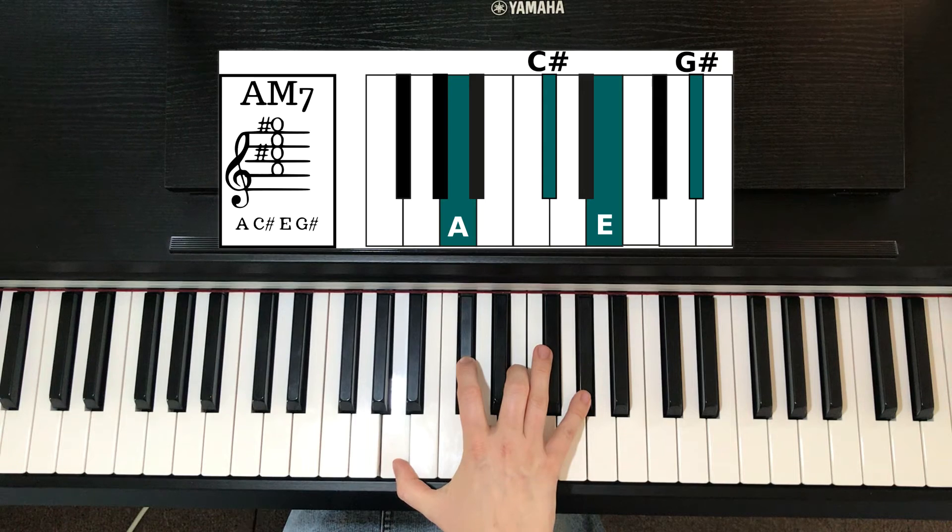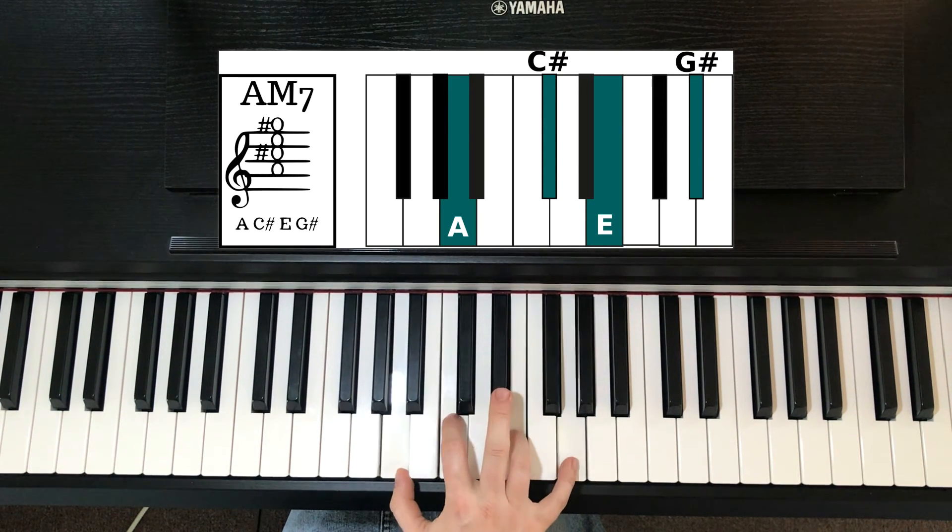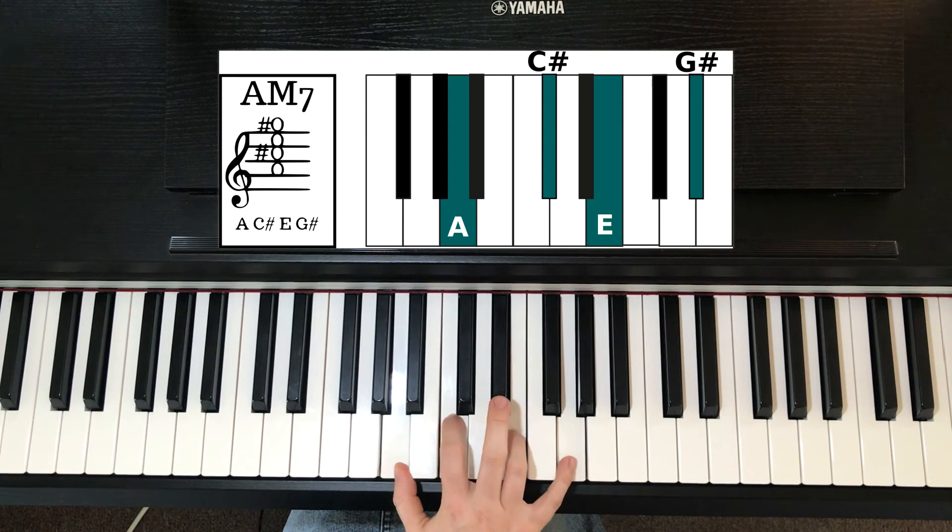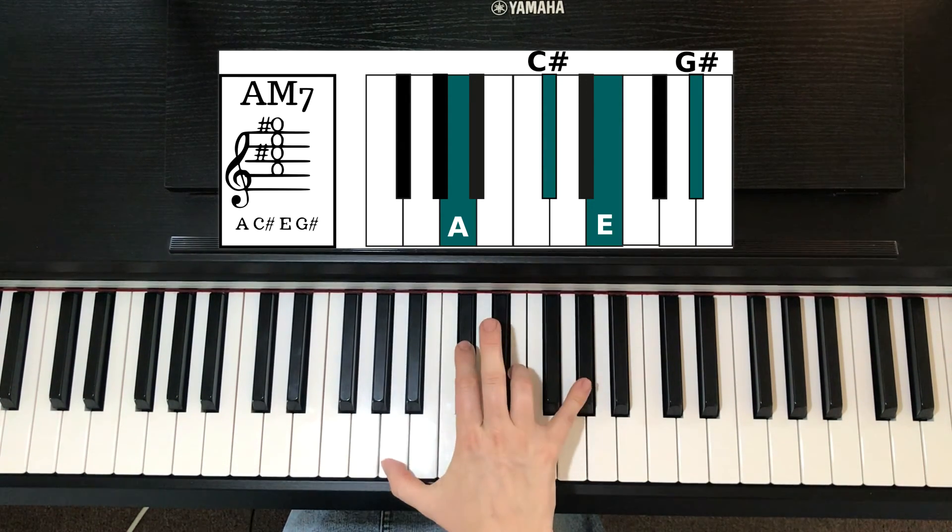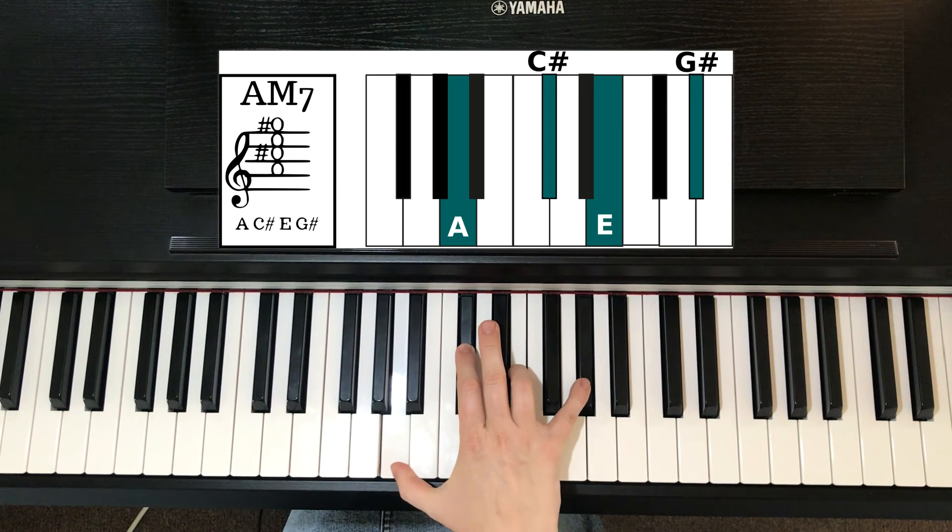It's different than an A small M seven, which is that one. A small M seven, that's the minor seven. This is a major seven. Just to show you the difference there.